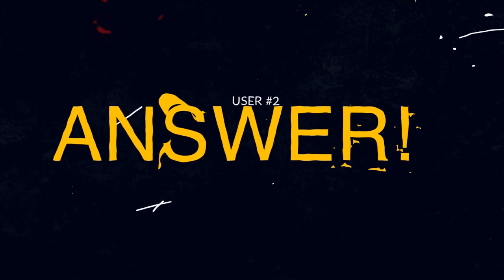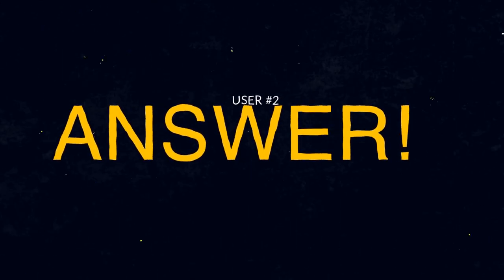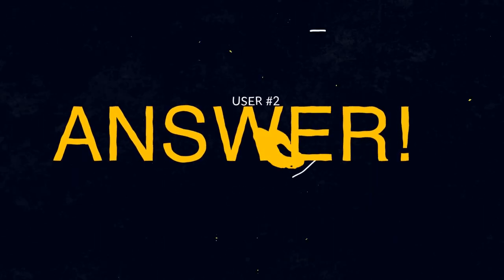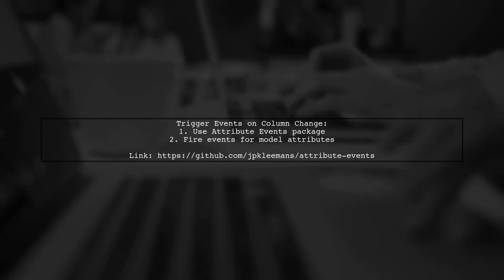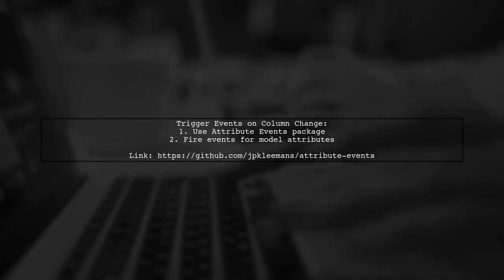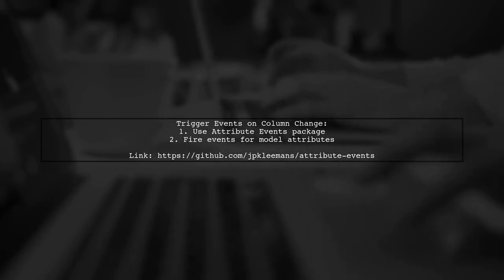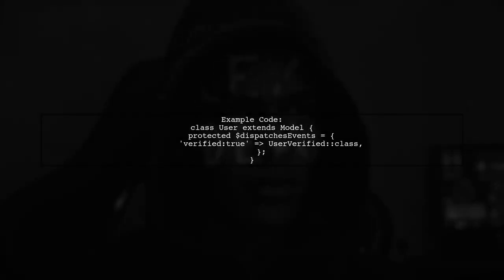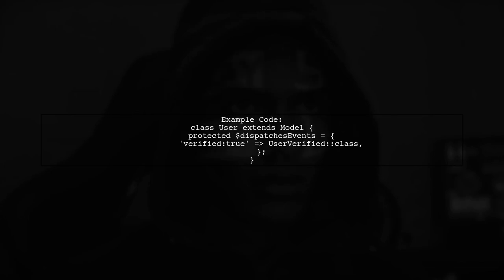Let's now look at another user-suggested answer. To trigger an event when a specific column in the user's table changes, you can use the Attribute Events package. This allows you to fire events based on model attribute changes. In your User model, you can define which events to dispatch. For example, when the verified attribute changes, you can dispatch the UserVerified event.